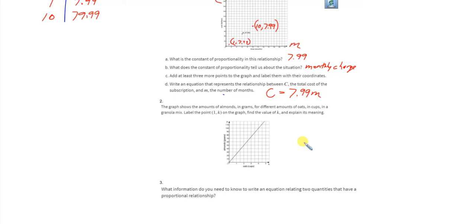I'm sorry, almonds to oats - grams and cups in a granola mix. We label the point (1, k) on the graph and find the value of k. So at 1, it's right here when 1 is your x value. We go up on the graph to right here.